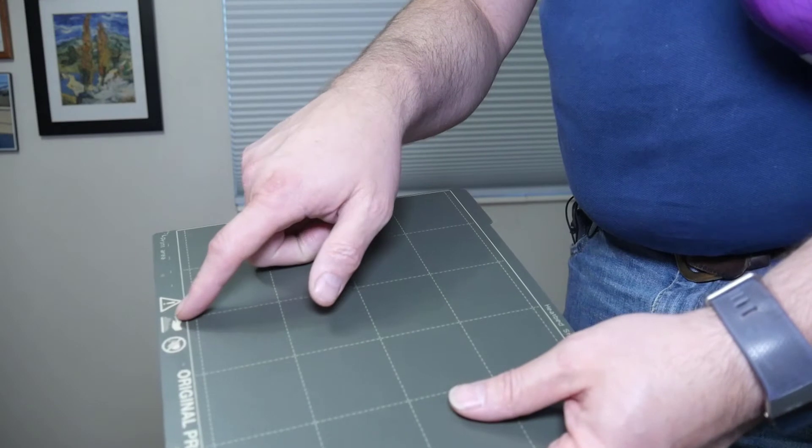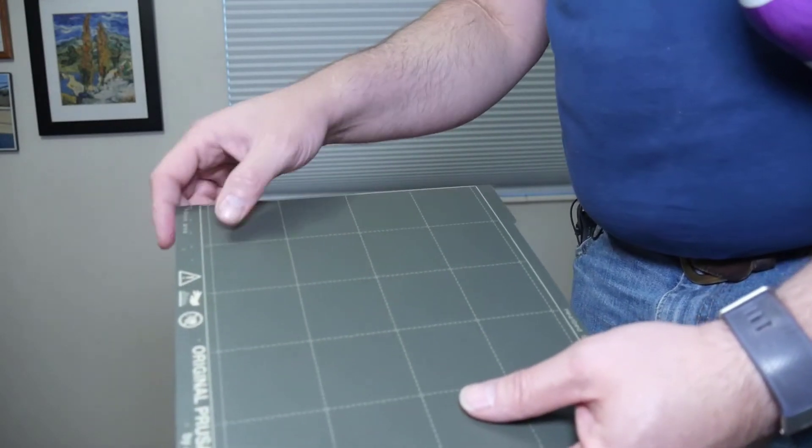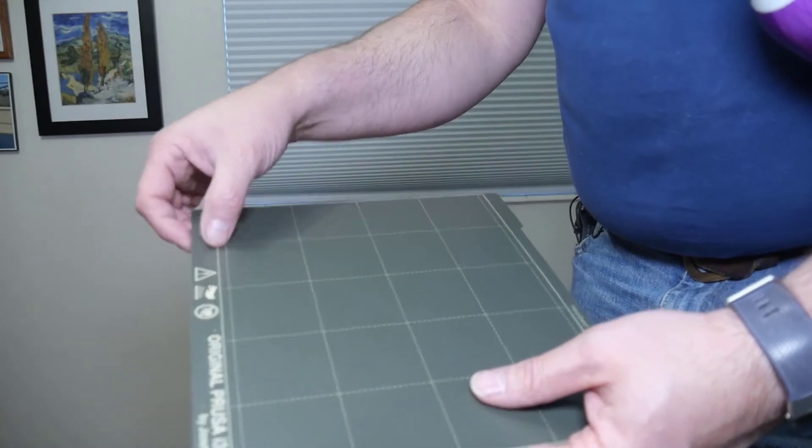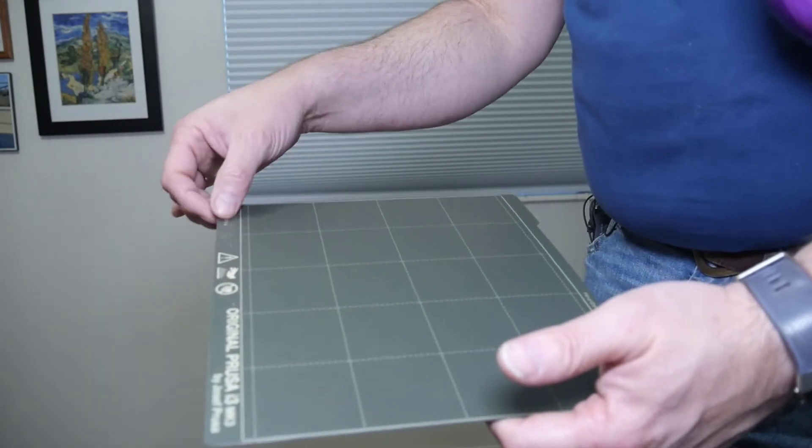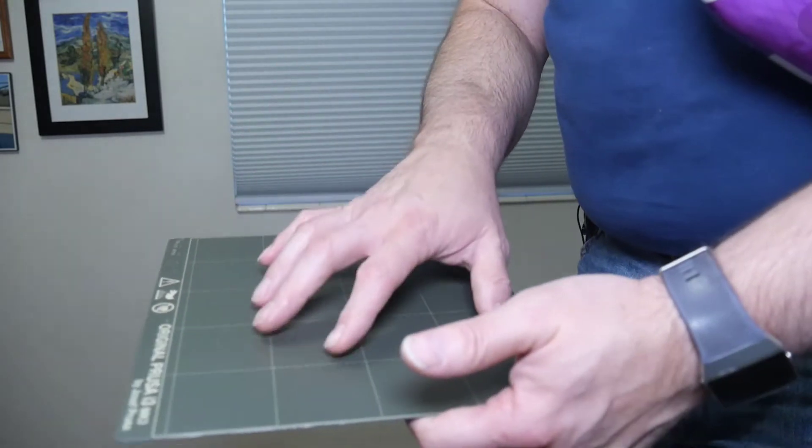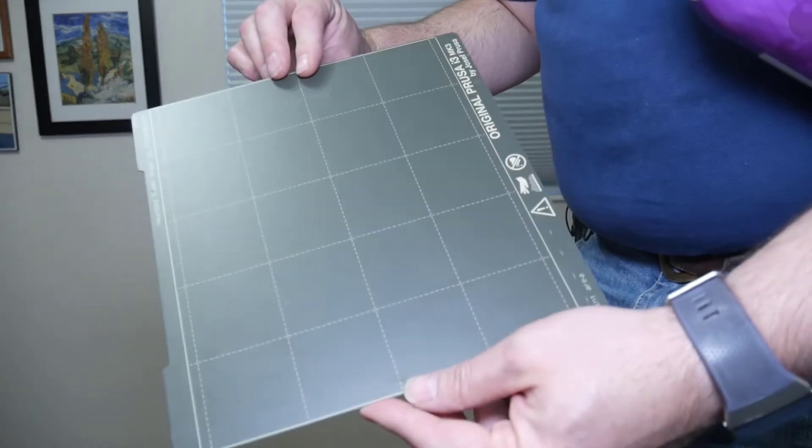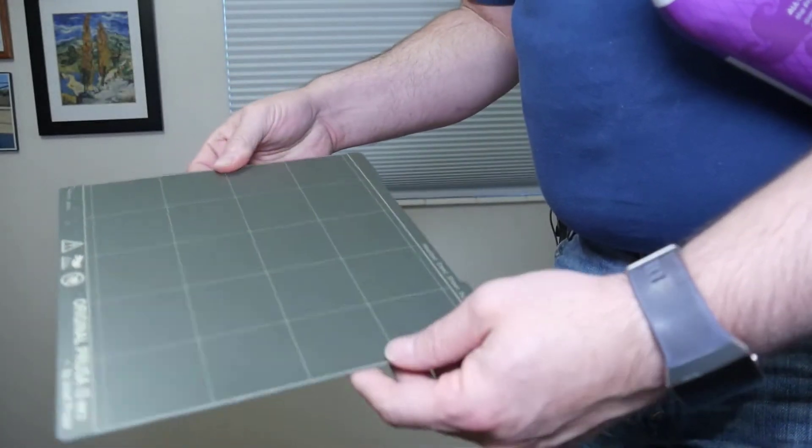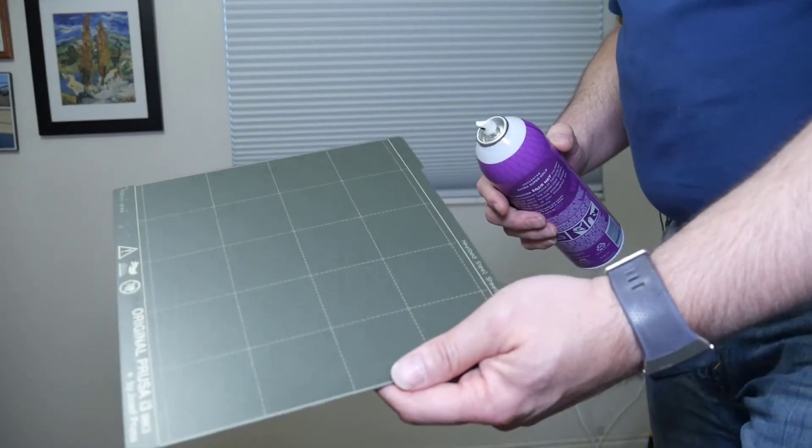But I also put some extra focus right there where the prime line goes because that prime line can dig in over time. So I put a little extra right there to protect the PEI a little bit from that prime line. Now, like this plate, I've had this plate for a while. I mean, it's looking pretty much brand new, both sides. So I've used it quite a bit. This hairspray really helps protect it.